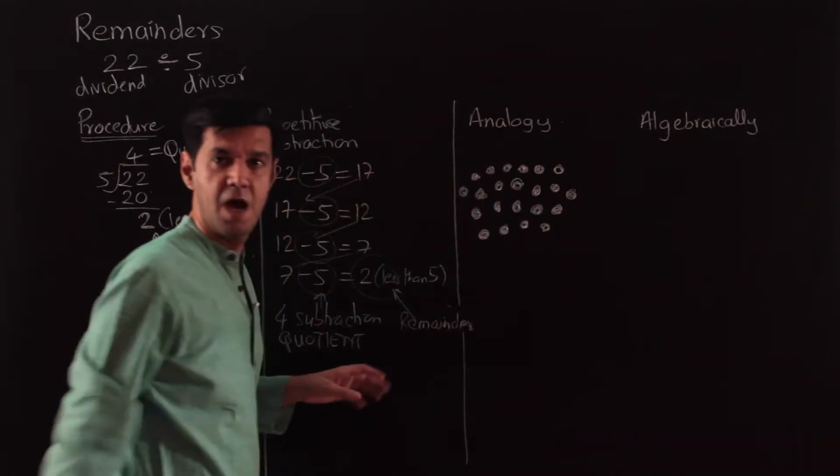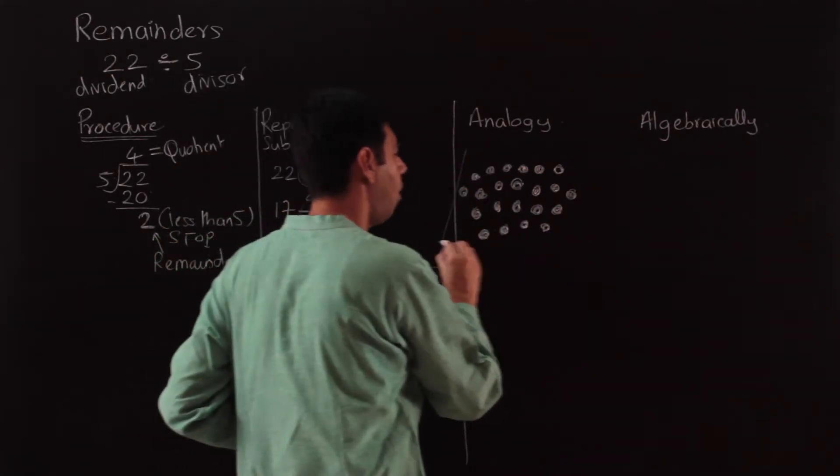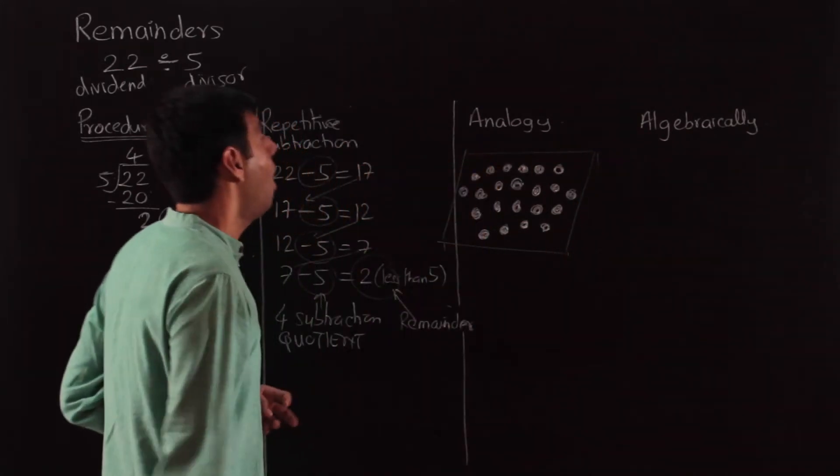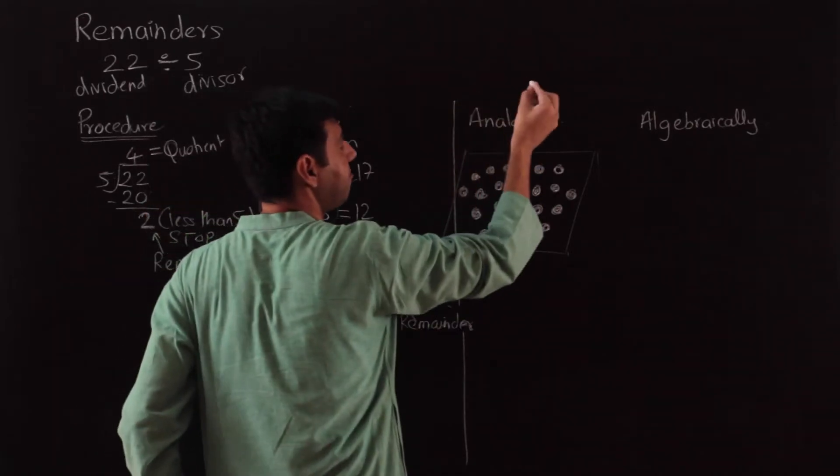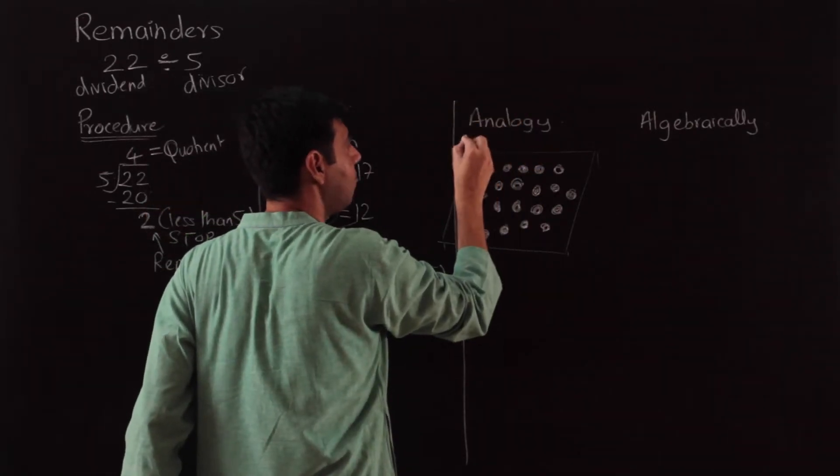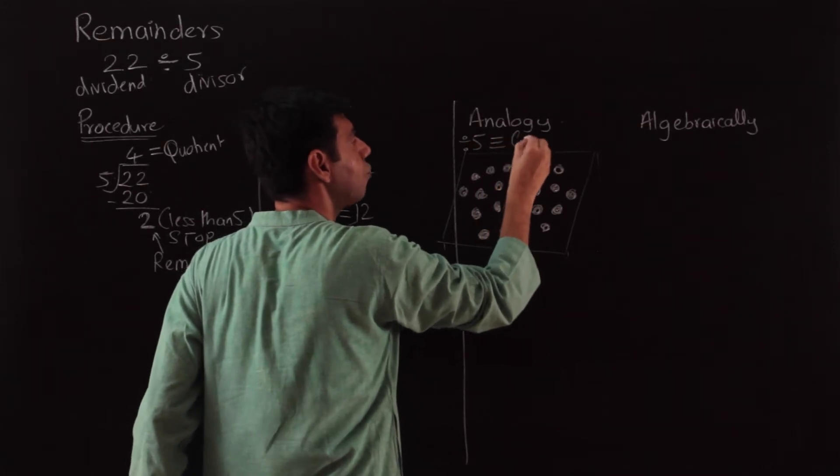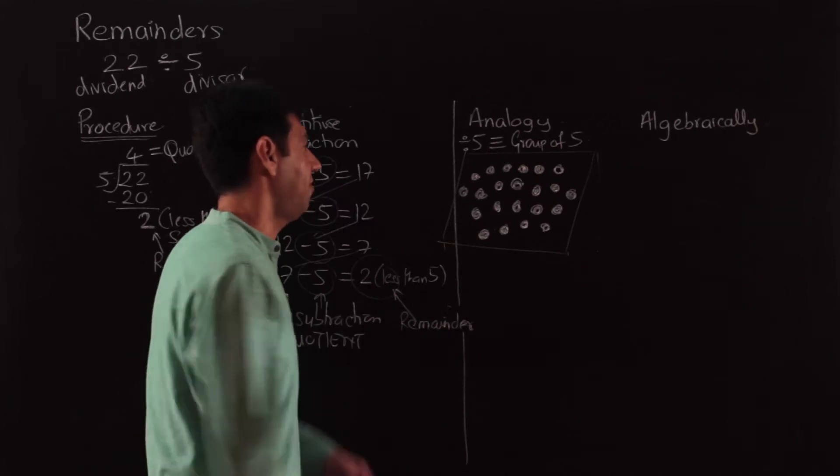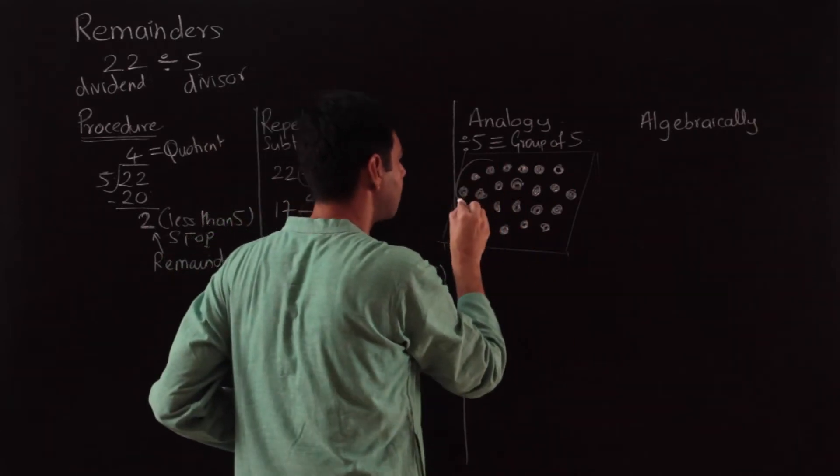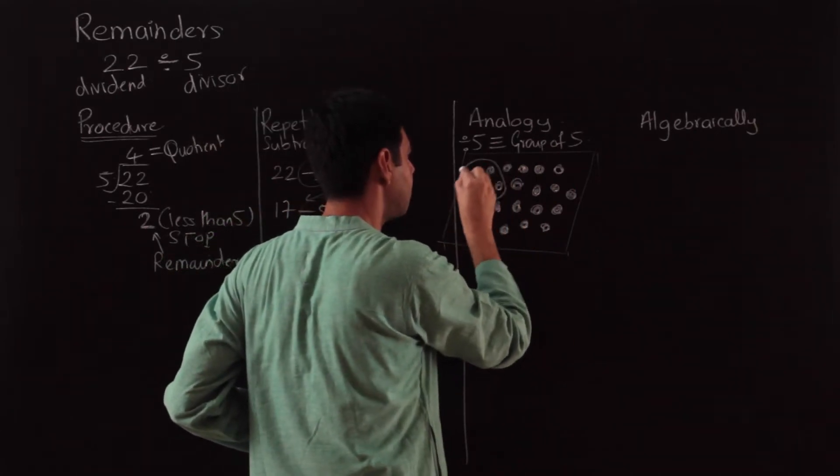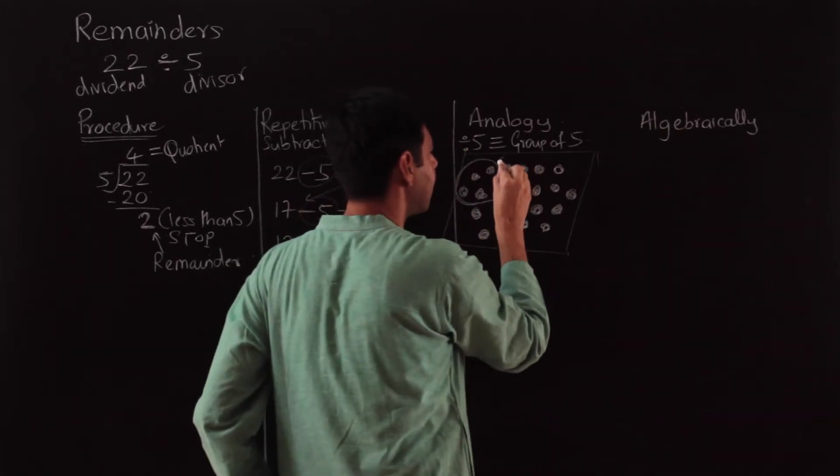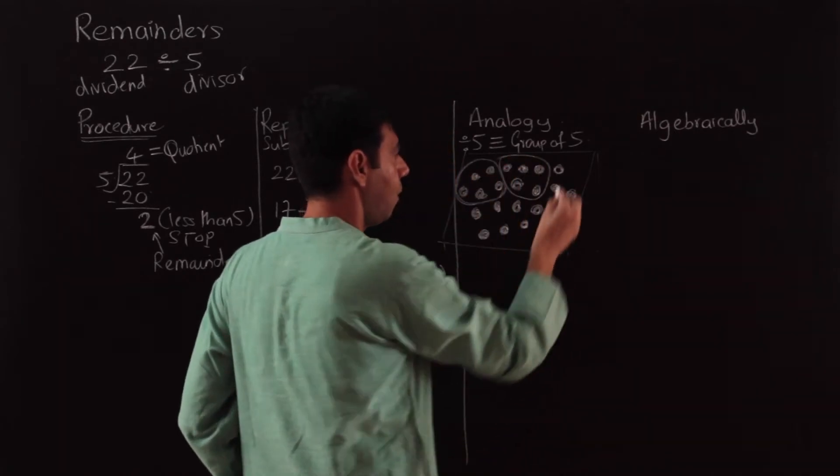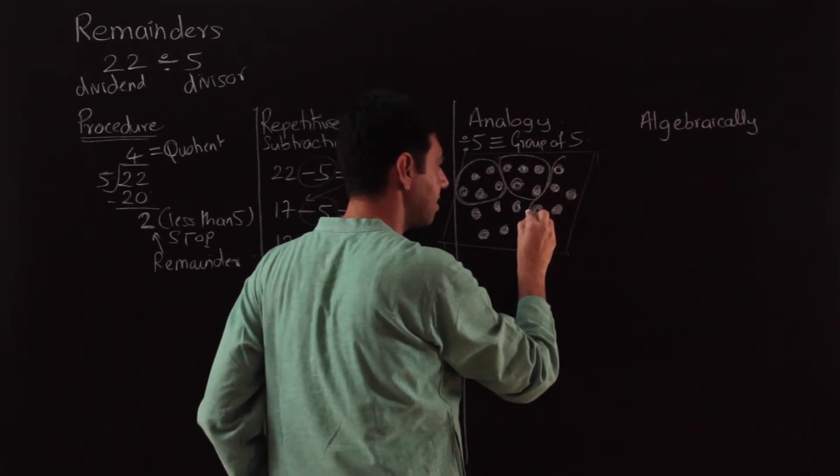You can picture a table also. On a table there are 22 marbles. When we divide by 5, dividing by 5 is equivalent to forming groups of 5. So I take 1, 2, 3, 4, 5—this is one group. I take another group—this becomes another group.